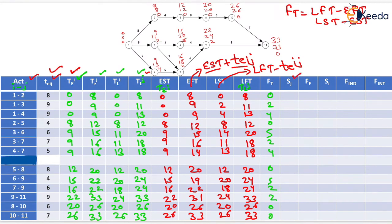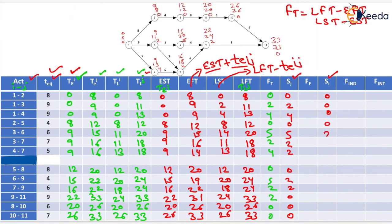We fill the slack of the j-th event: event 2 = 0, event 3 = 2, then 4, 0, 5, 2, 2, 0, 2, 2, 0, 0, and event 11 = 0. For slack of the i-th event: event 1 = 0 (three rows), event 2 = 0, event 3 = 2 (two rows), event 4 = 4, event 5 = 0, event 6 = 5, event 7 = 2, event 9 = 2, event 8 = 0, event 10 = 0.